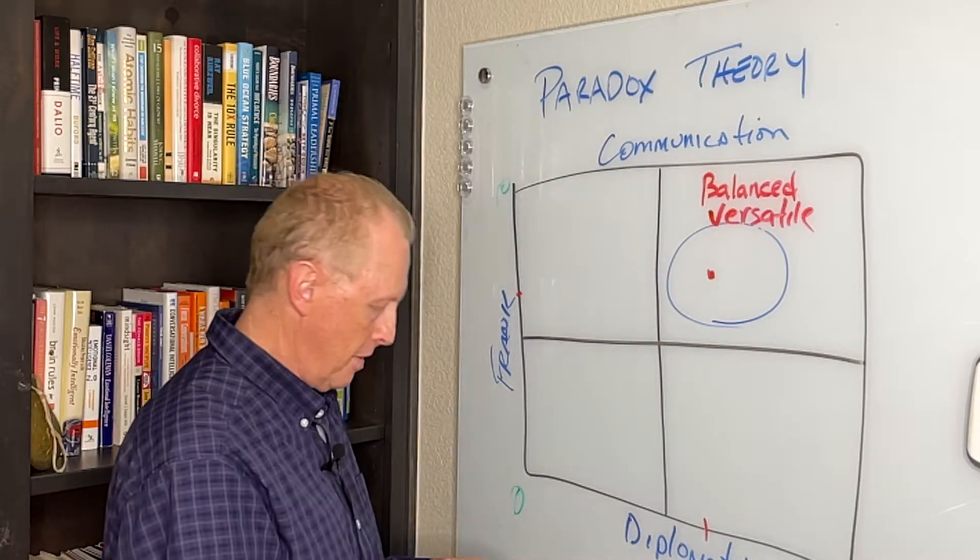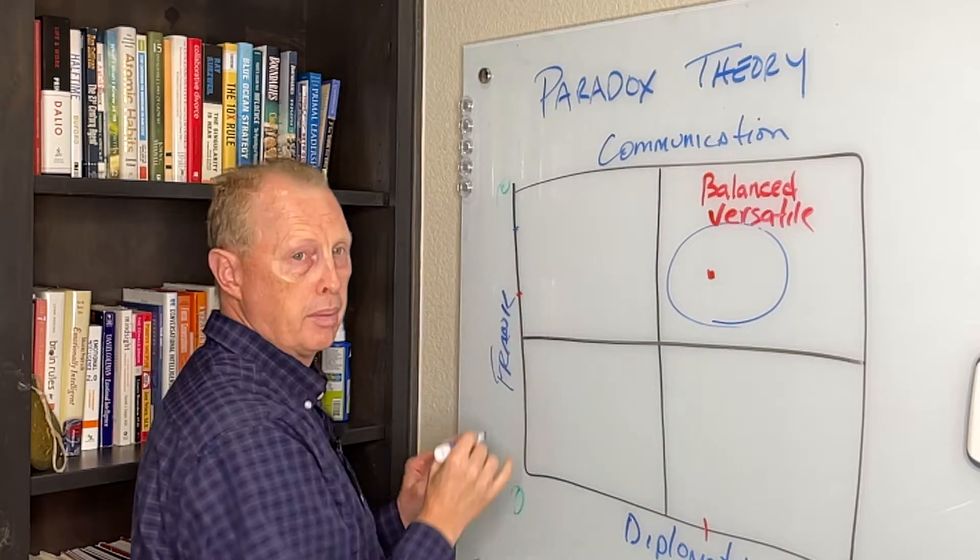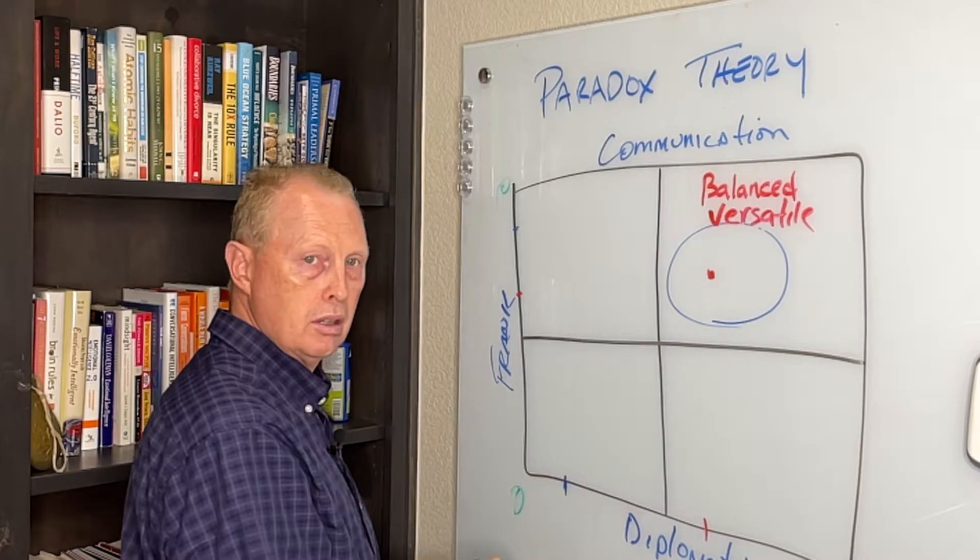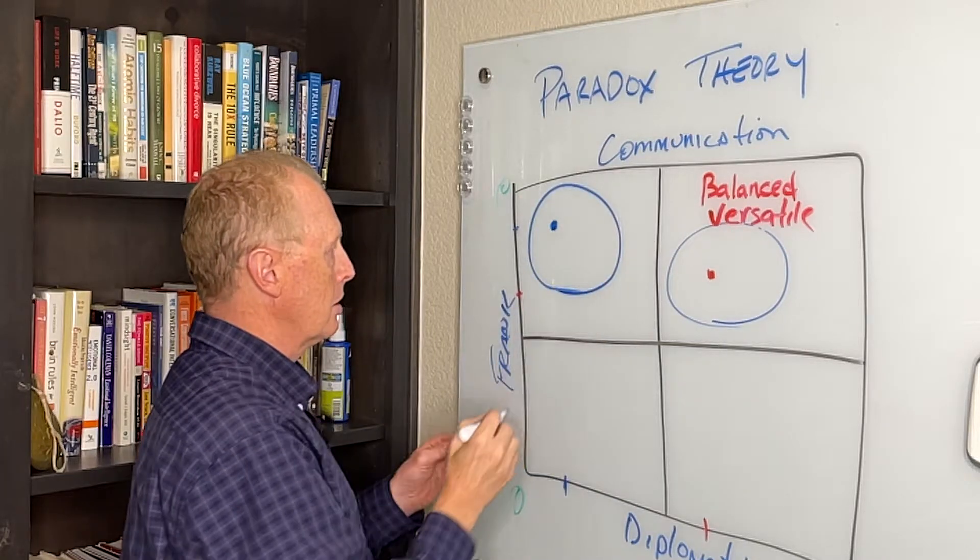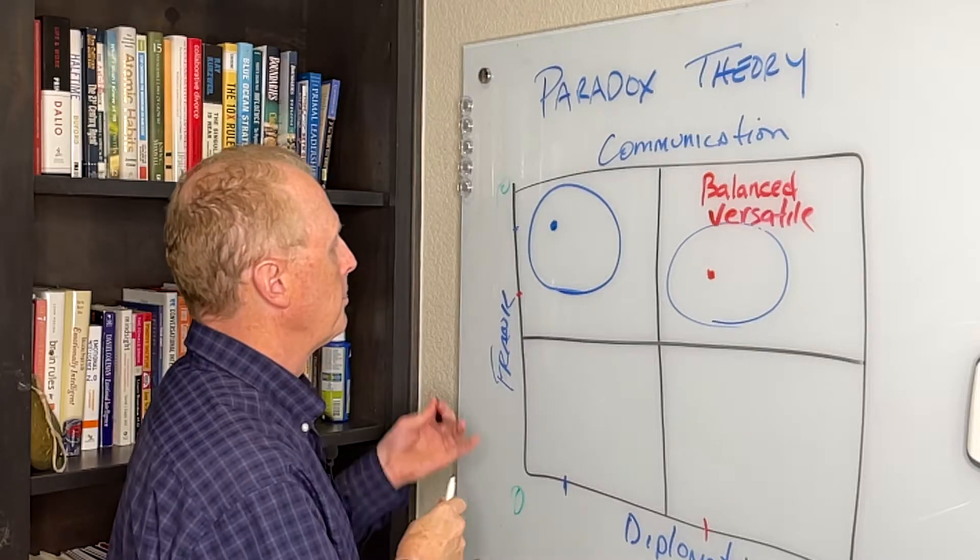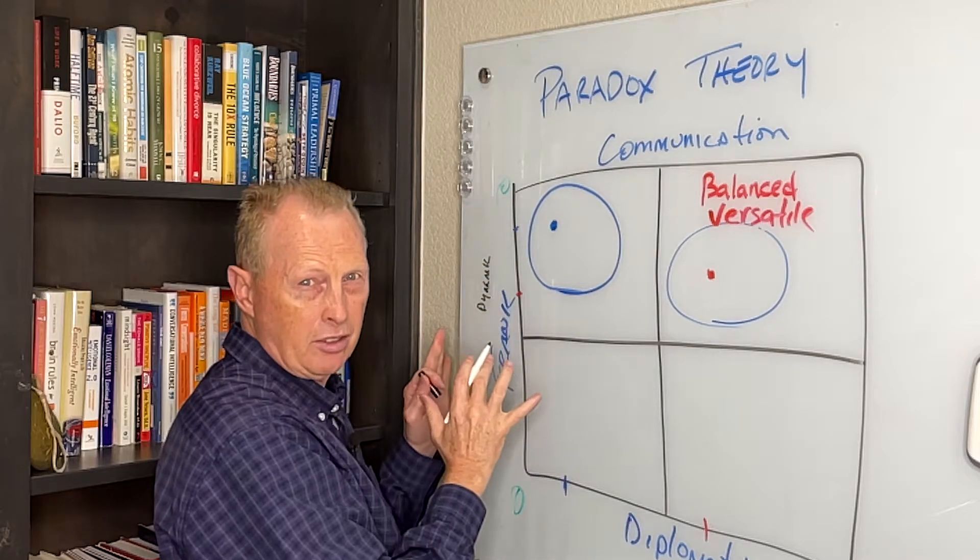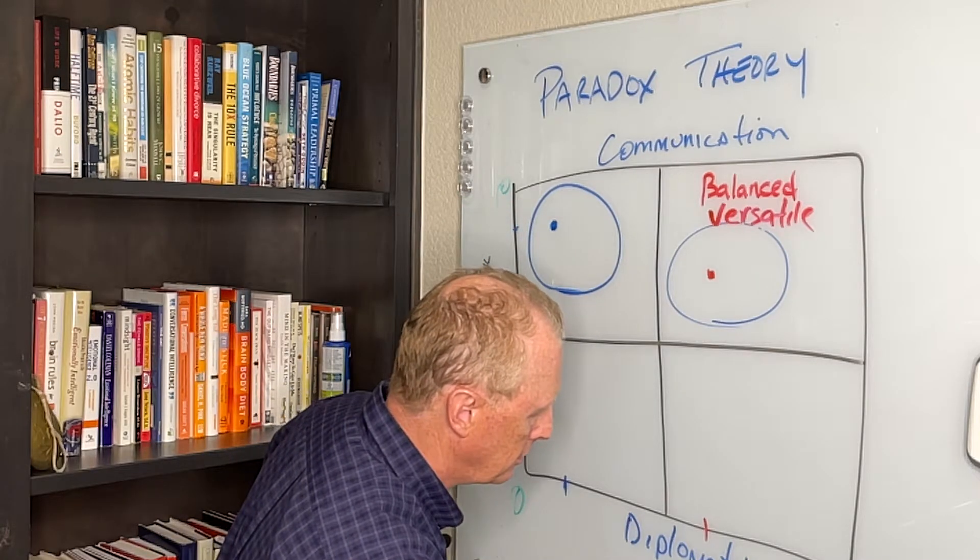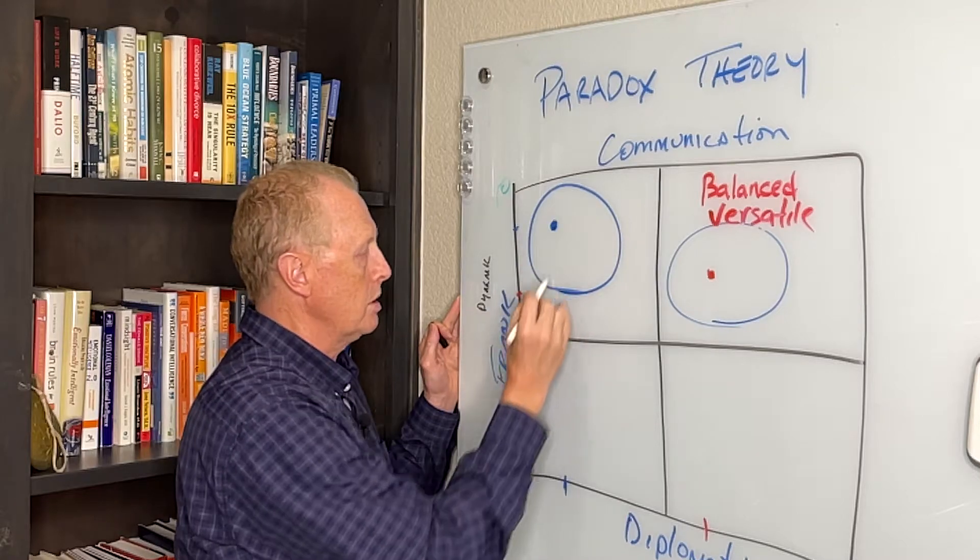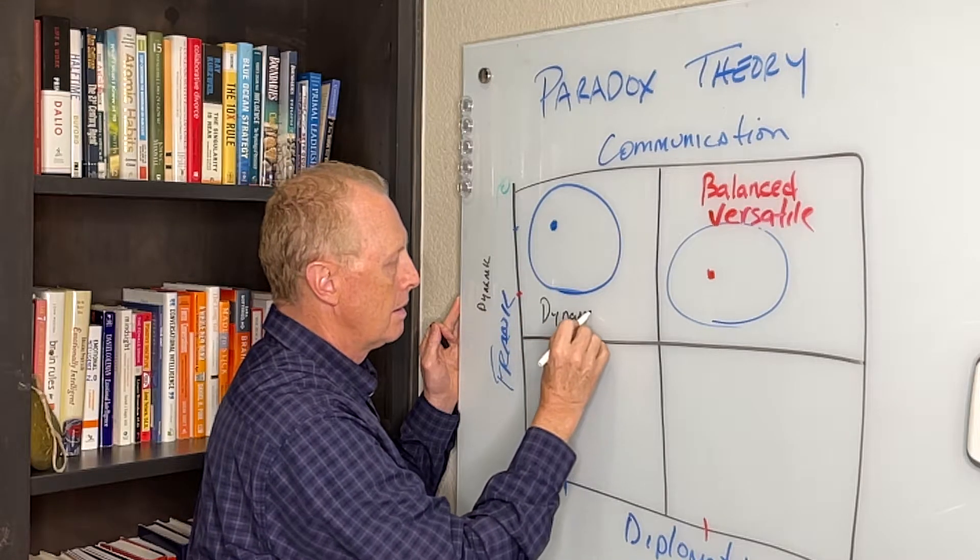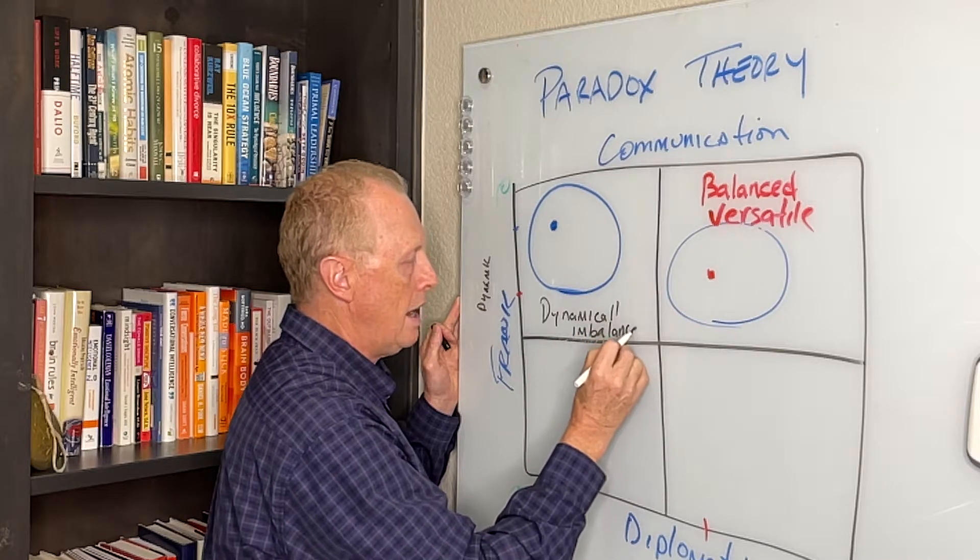Now what happens if I'm high on being frank, so let's say I'm an 8 on frank, but I'm a 2 on diplomatic. So I'm going to be plotted about right here. Therefore my range of behavior will be up in here. This is called, this is a dynamic trait by the way. It's kind of an active, this is the supportive trait, more of a passive. This is a dynamic because I'm in the dynamic quadrant, but I'm dynamically imbalanced because I only have one point.